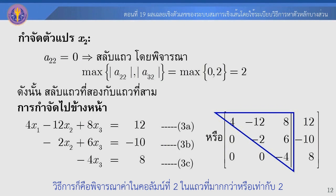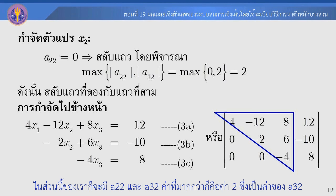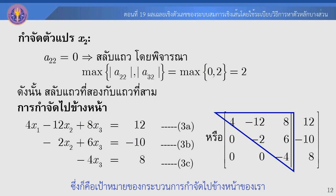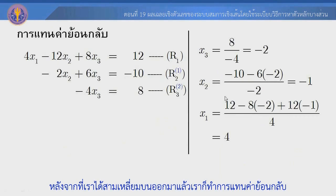In the next forward elimination step, A22 is 0, so we cannot proceed with elimination. We need to compare the absolute values of A22 and A32. The maximum is A32, so we swap rows 2 and 3. We then need to create the updated matrix.